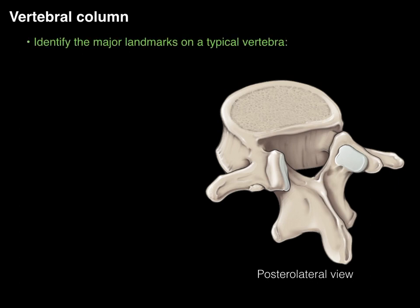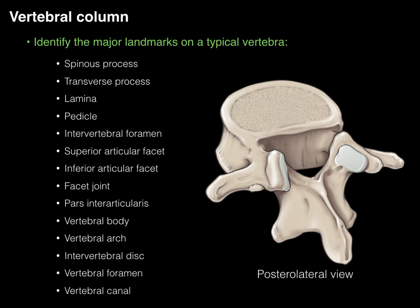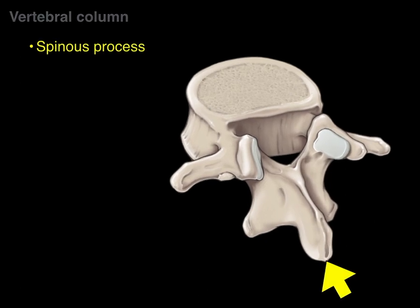The vertebral column has certain landmarks. We'll identify the major landmarks on a typical vertebra using a posterior-lateral view of a lumbar vertebra. These landmarks are the same for cervical, thoracic, and lumbar vertebrae. The first is the spinous process — the prominent posteriorly pointing projection for ligaments and muscles to attach.